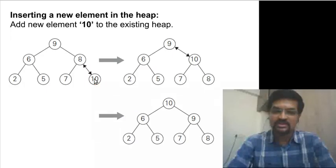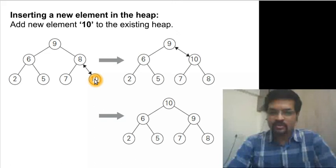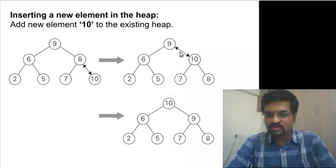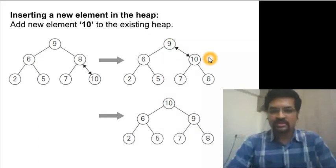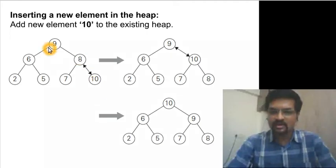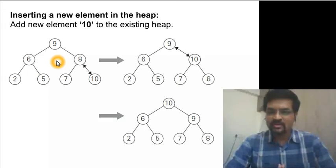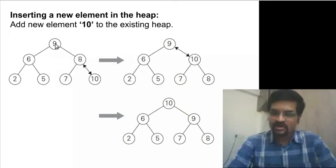Consider inserting 8.5 instead. It would swap with 8, but 8.5 is less than 9, so parental dominance is already satisfied and we stop there. In general, to insert a new node: walk up the ancestral path toward the root, and stop as soon as parental dominance is satisfied at any point.